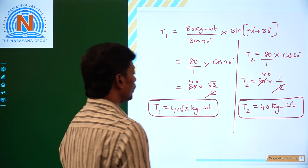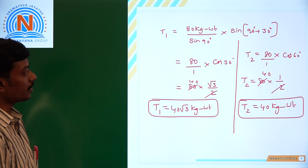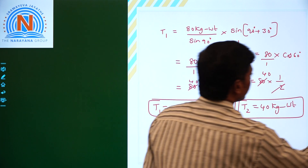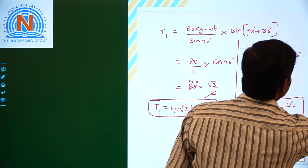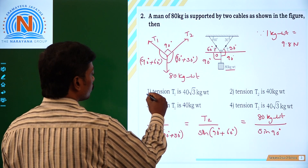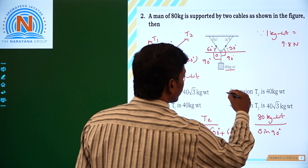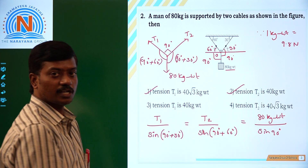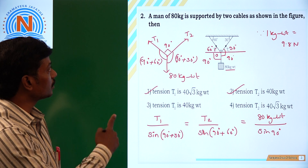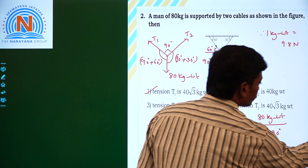So the tensions in the cables are T1 equal to 40√3 kg weight and T2 equal to 40 kg weight. Looking at the options, options 1 and 2 are both correct for question number 2. Let's see the third question.